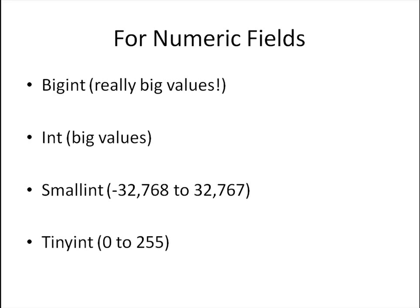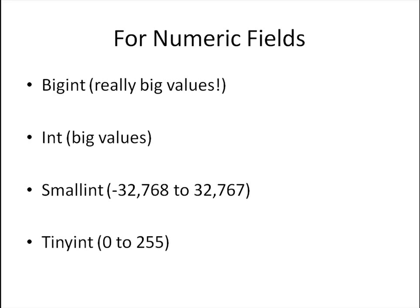Then you've got the DECIMAL and the NUMERIC data types, which are used to store fractional values. For both these data types you have to mention two things as arguments. The first is the size of the value — the display length, denoted as m. For example, if you're storing 57.64, the value of m would be 4 because 57.64 has four digits in total. The second argument, d, is the number of digits after the decimal point, which would be 2 because we just have .64.